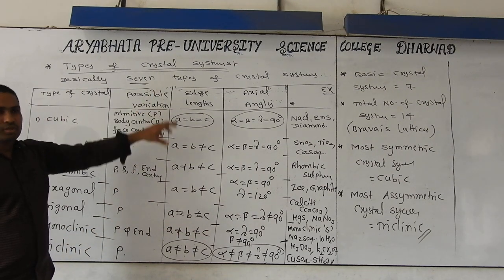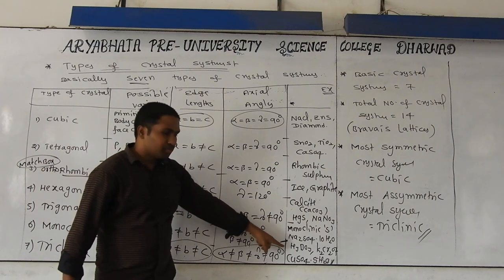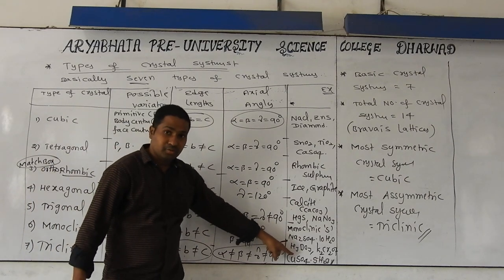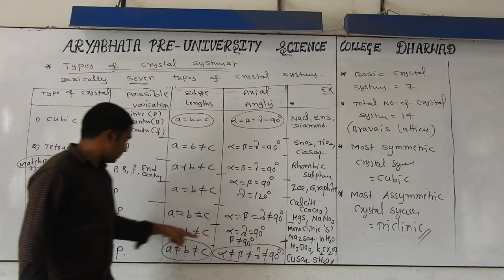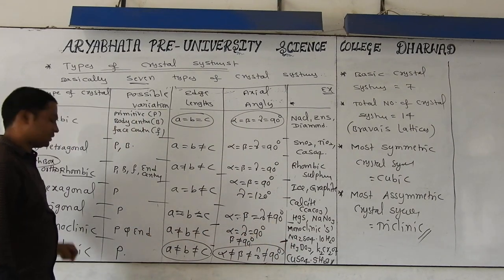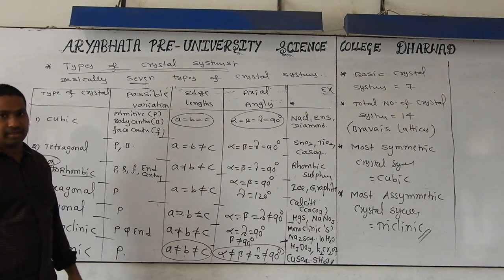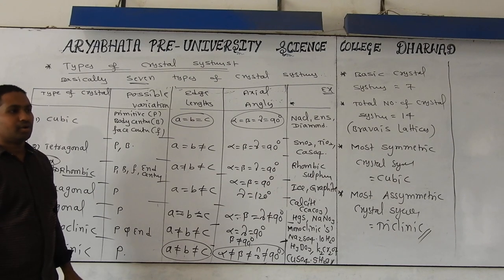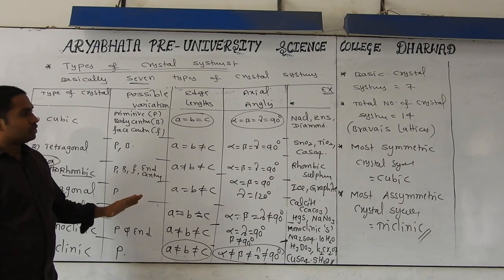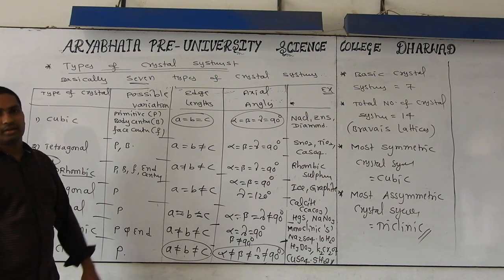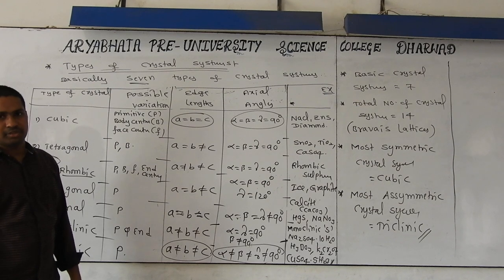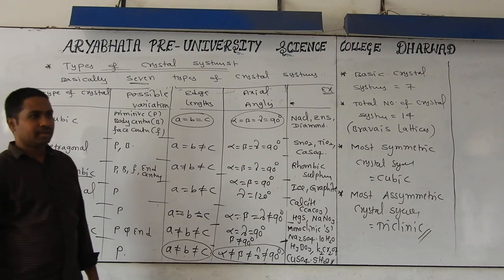These are the most repeated things and we have to identify from a given diagram which type of crystal system it belongs to. You have to practice carefully and go through this thoroughly — you will get the competitive examination information from this.